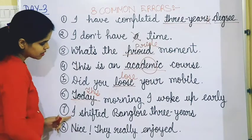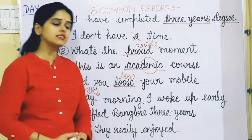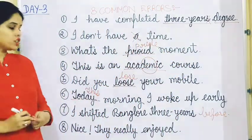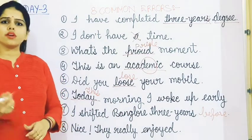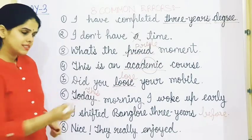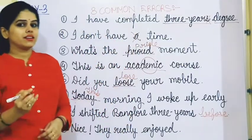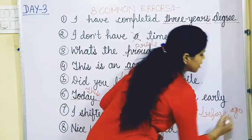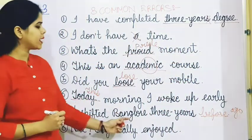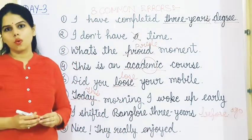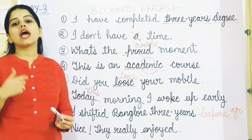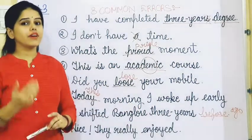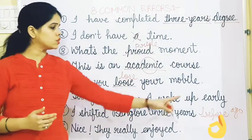The seventh sentence is: I shifted to Bangalore three years before. The mistake is the word 'before'. We can't use 'before' here — the correct word is 'ago'. 'Before' is correct in phrases like 'before my marriage' or 'before I go shopping', but when talking about a time period in the past, we should use 'ago': I shifted to Bangalore three years ago.